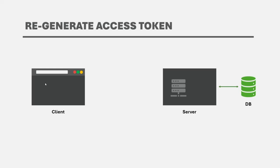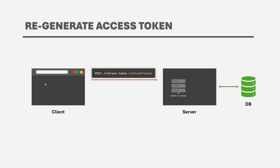The reason for returning both access token and refresh token in the response is that in the frontend application, both tokens will be saved on the client. On the frontend, developers usually keep a check on when the last access token was issued. As soon as the access token is about to expire, the frontend application requests a new access token with the help of the refresh token without letting the logged-in user know. As a frontend developer, you have to write logic that keeps a check on when the JSON web token is going to expire, and as soon as the access token is about to expire, the client will automatically make a request to the server.